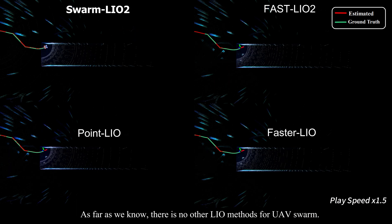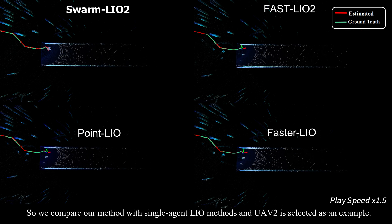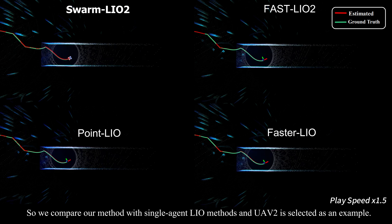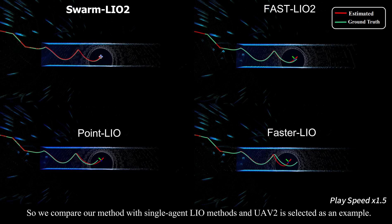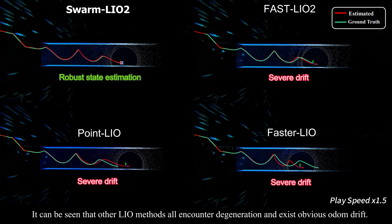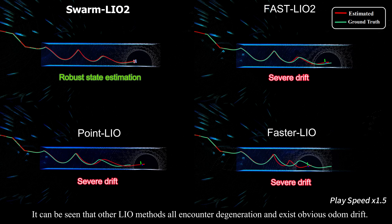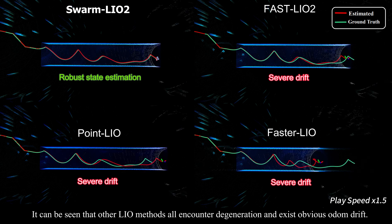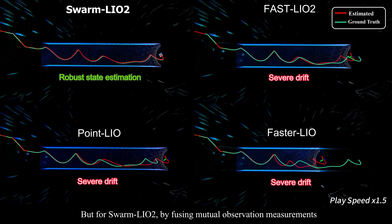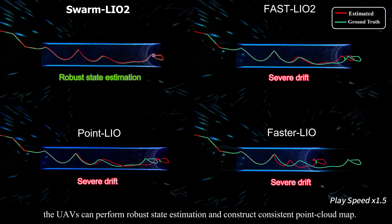As far as we know, there is no other LiDAR odometry method for UAV swarms. So we compare our method with single-agent LiO methods, with UAV2 selected as an example. It can be seen that other LiO methods all encounter degeneration and exhibit obvious odometry drift. But for Swarm LiO2, by fusing mutual observation measurements, the UAVs can perform robust state estimation and construct a consistent point-cloud map.